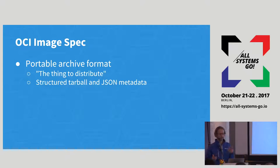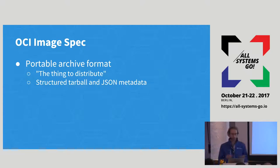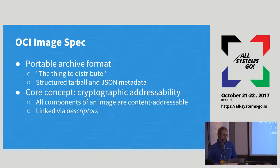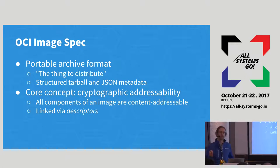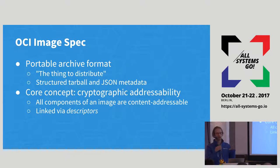Focusing on the image spec: that's the portable archive format — the thing you want to package and distribute when sharing containers. It's pretty boring — just a structured tarball and JSON metadata describing that. One of the key things in developing this spec was the emphasis on content addressability, because that had been missing from earlier container implementations. All of these components are addressed by a hash of their contents — their byte stream — and then these are linked together by these content addresses.